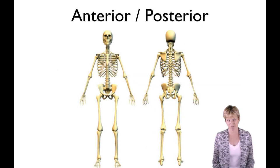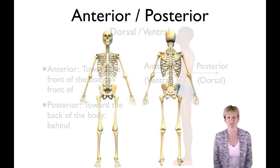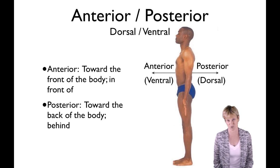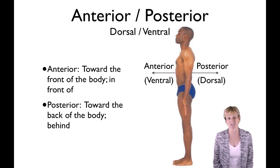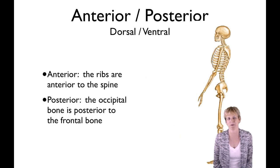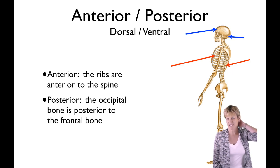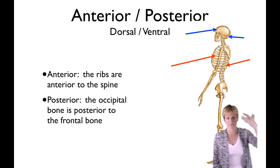Anterior and posterior can refer to the entire body. In anatomical position you see the front of the body, the anterior part; the other side being the posterior. Often we're talking from a side view — things towards the front of the body or towards the back. We also use the terms dorsal and ventral, which I'll get back to in a moment. Anterior is towards the front; posterior is towards the back or behind. For example, the ribs are anterior to — in front of — the spine. The occipital bone, at the back of the head, is posterior to the frontal bone at the forehead.